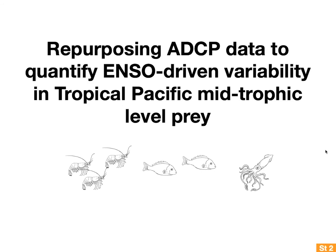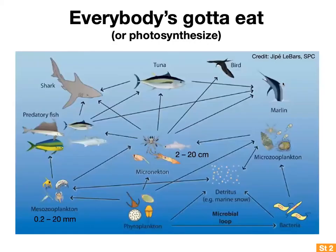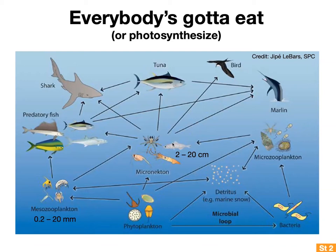Story number two is called Repurposing ADCP Data to Quantify ENSO-Driven Variability in Tropical Pacific Mid-Trophic Level Prey — still a work in progress. While story number one discussed ENSO-driven oxygen variability, here I talk about analogous variations in prey availability. Mid-trophic level mesozooplankton, ranging from about 0.2 to 20 millimeters, and micronecton, ranging from 2 to 20 centimeters, are especially important sources of food for tuna both in the tropical Pacific and across the global oceans.